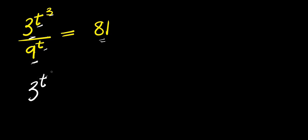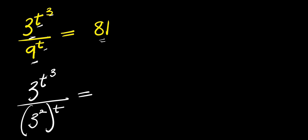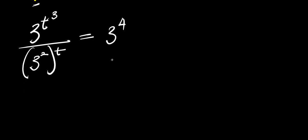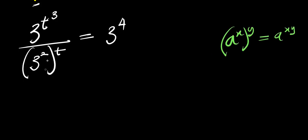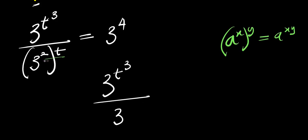I can rewrite this as 3^(t³) divided by 9, which is simply 3², raised to the power t, equals 81, which is simply 3⁴. Now, using the identity (a^x)^y = a^(x·y), I multiply the exponents: 3^(t³) divided by 3^(2t) equals 3⁴.